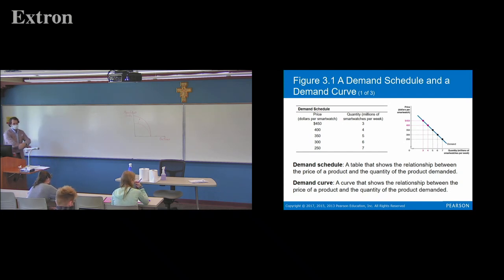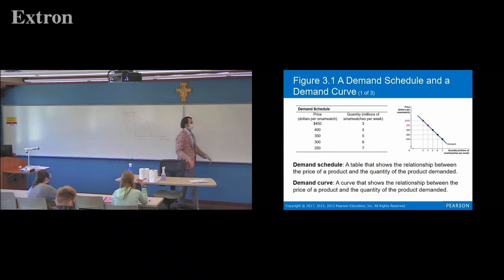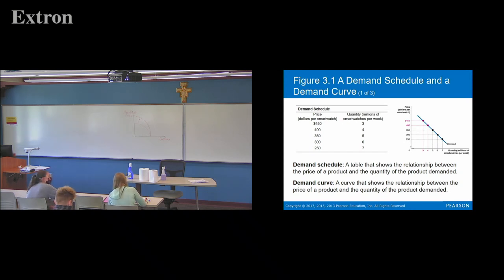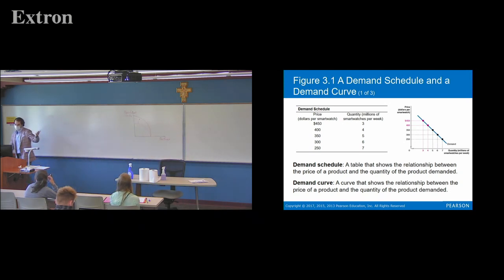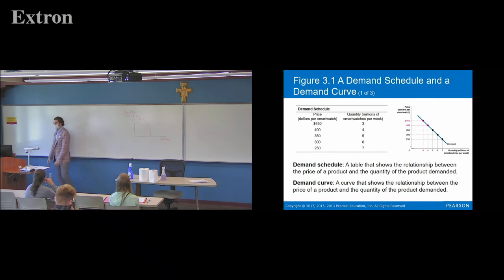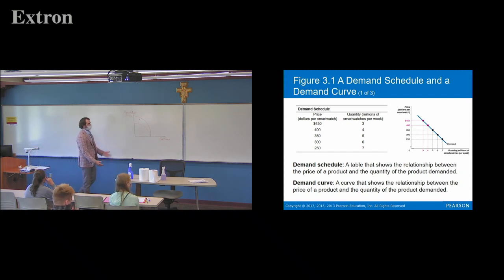Now we can graph this demand schedule. Demand schedules are kind of clunky to work with, but the graph provides a nice visual. We have price on one axis and quantity demanded on the other, and our demand curve is sloping down — we just plot all these points and connect them with a line. In this case the demand curve is sloping downward in a straight line. That's not necessarily always the case — it can be pretty much any shape. We'll work with straight ones just because they're easy to visualize.